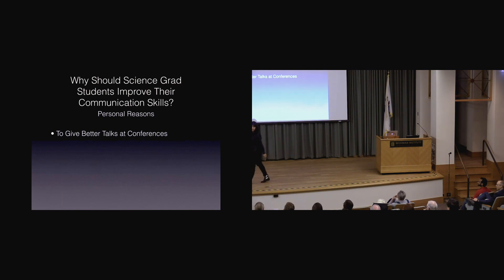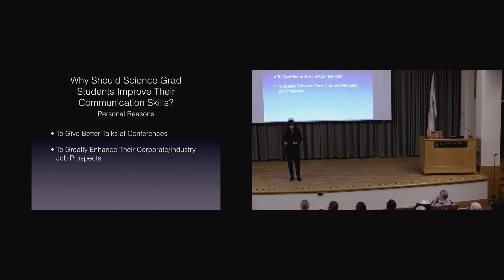One is to give better talks at conferences. Sometimes the graduate student goes off to a conference without preparation or training and has to give their first talk. Either it's the moment in slow motion like a deer in the headlights, or they felt they gave a really good talk but people didn't seem to understand it afterwards.